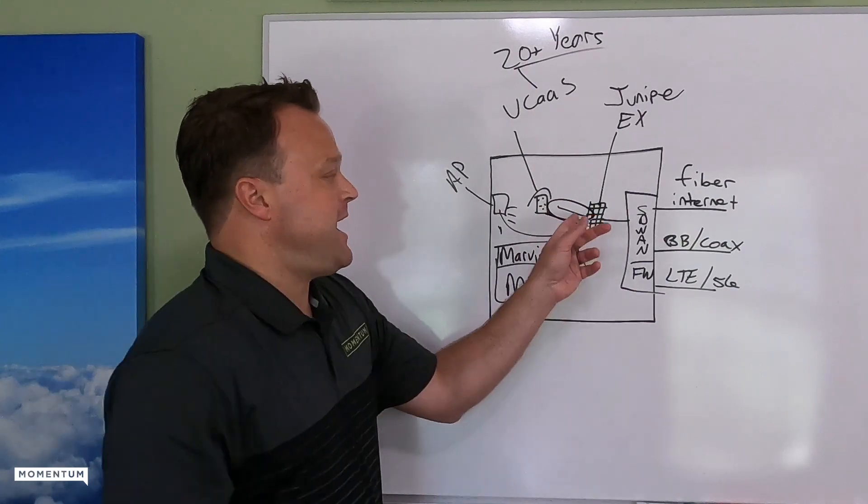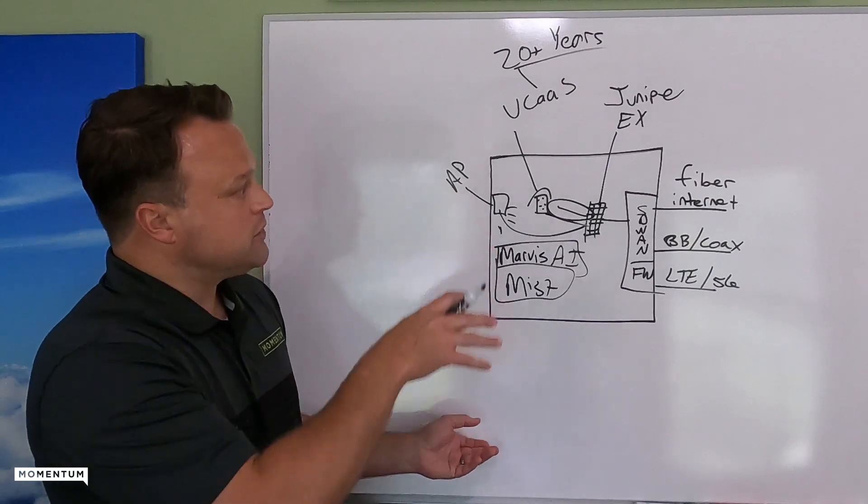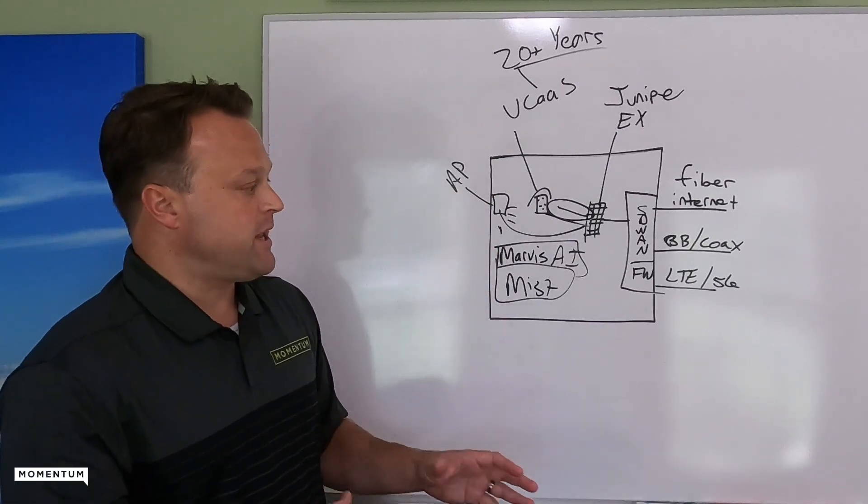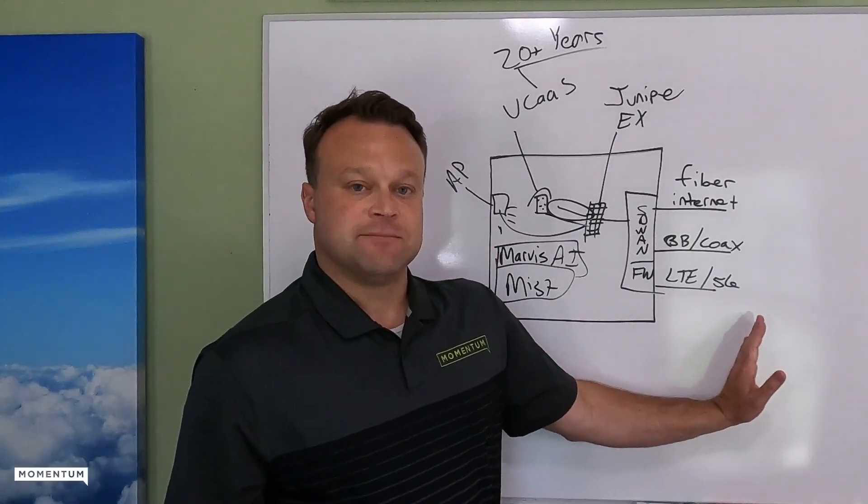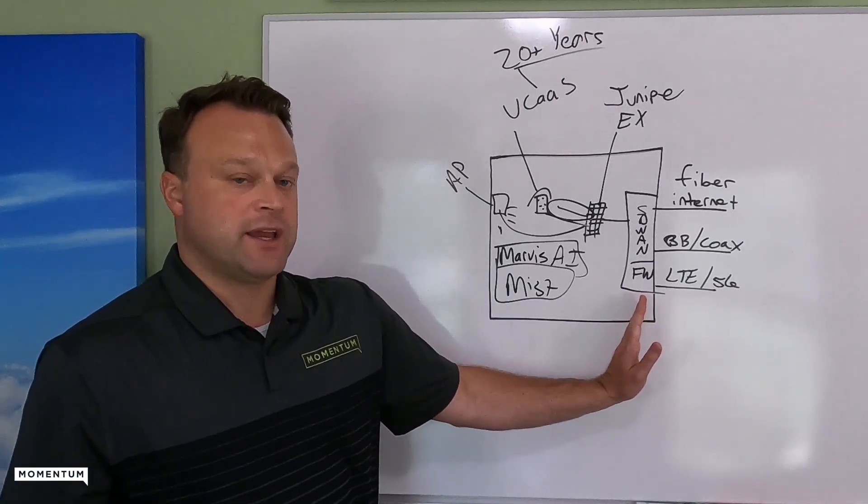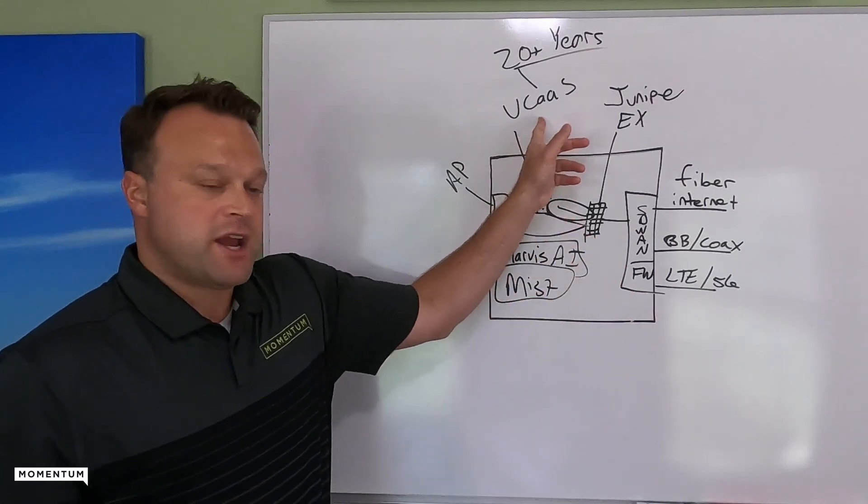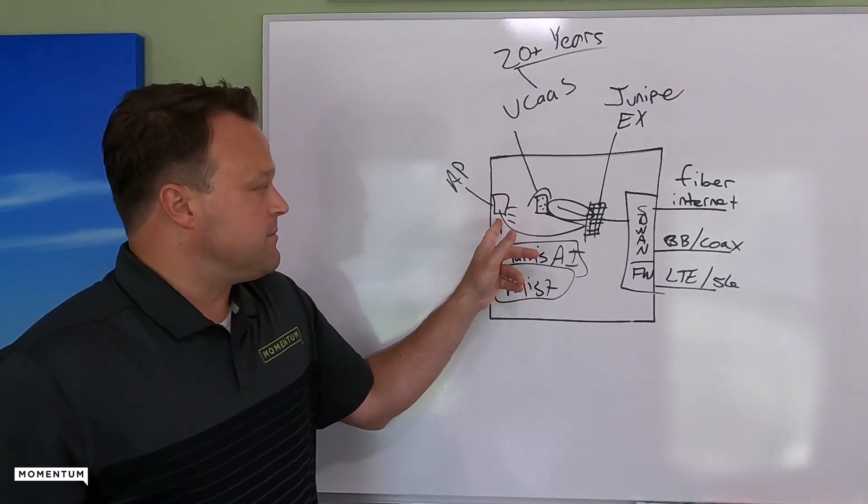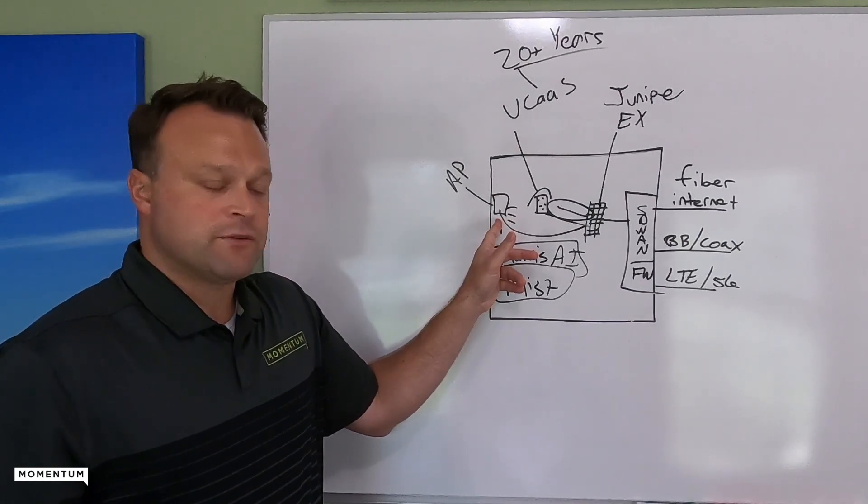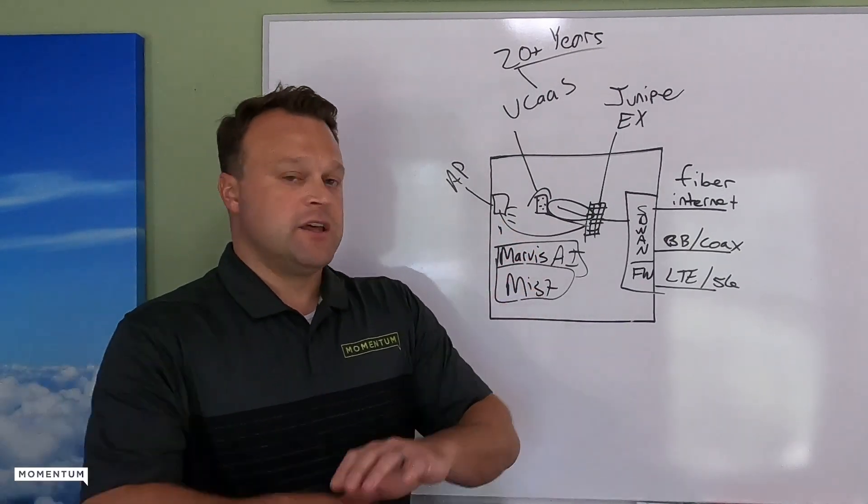It could be a bad patch cable that the AI can now pinpoint. So when you look at the total solution, what we're managing everything from outside of the building, the internet connectivity coming in, hitting the SD-WAN firewall appliance, the switch, the handset, the UCaaS offering. Then you get into the access points for wireless internet, all being managed with MIST and MARVIS AI.